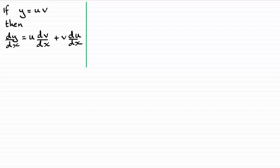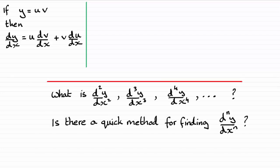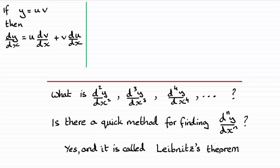Hi, you should already be familiar with the product rule for differentiation — that if you've got y equals the product of two functions of x, say u and v, then dy/dx is given by that result. Now, it could be that we need to find higher differentials like d²y/dx², d³y/dx³, d⁴y/dx⁴ and so on. Is there a quick method, a formula, for finding dⁿy/dxⁿ? The answer is yes, and it's called Leibniz theorem, and that's what I'm going to show you in this video.